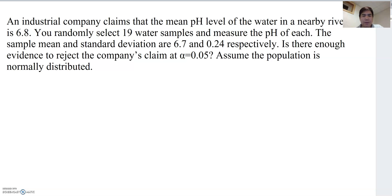Let's look at another example. An industrial company claims that the mean pH level of the water in a nearby river is 6.8. You randomly select 19 water samples and measure the pH of each. The sample mean and standard deviation are 6.7 and 0.24, respectively. Is there enough evidence to reject the company's claim at alpha equals 0.05? Assume the population is normally distributed.